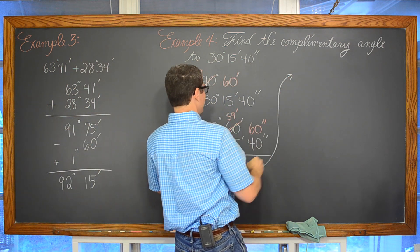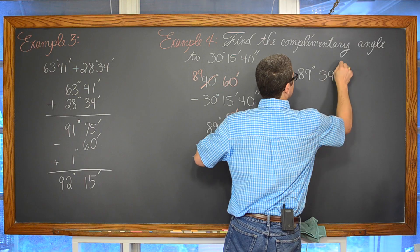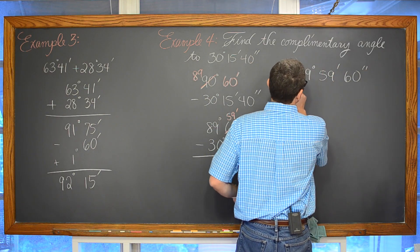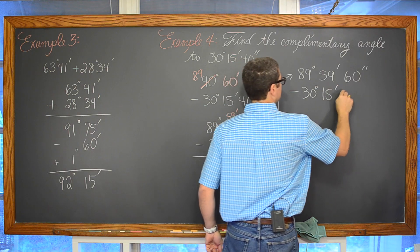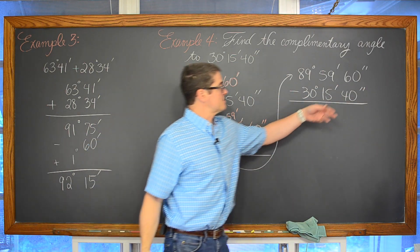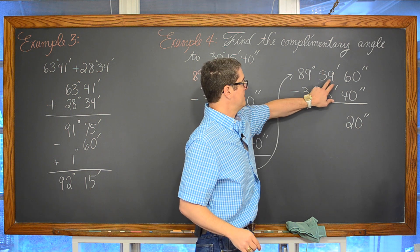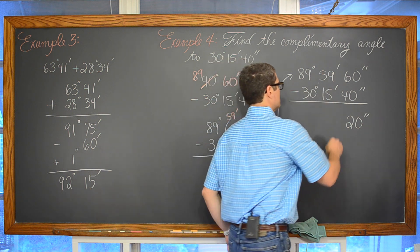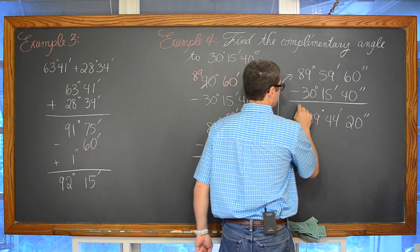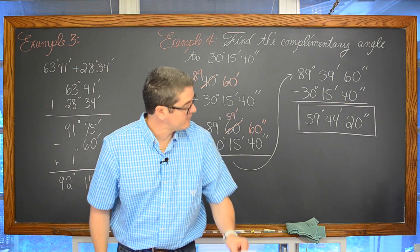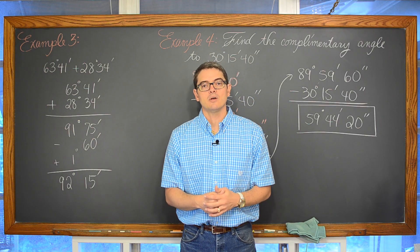Now bringing this all together, we have 89 degrees, 59 minutes, and 60 seconds, and we are subtracting 30 degrees, 15 minutes, and 40 seconds. So our final answer: 60 minus 40 is 20 seconds; 59 minus 15 is 44 minutes; and 89 minus 30 is 59 degrees. So the complementary angle is 59 degrees, 44 minutes, and 20 seconds. And that is how you deal with degree, minute, second notation — DMS notation — for angle measures.